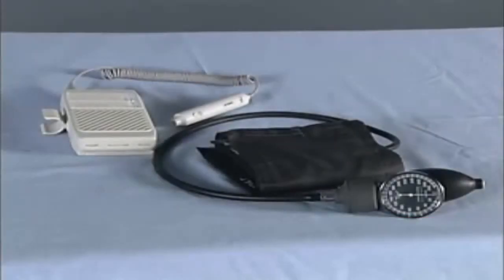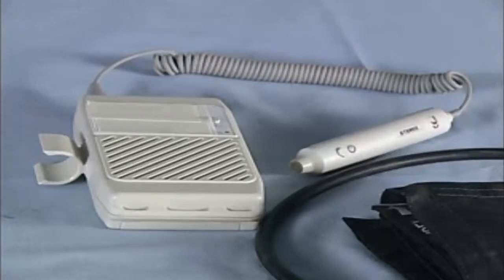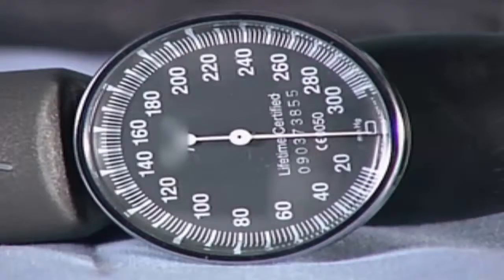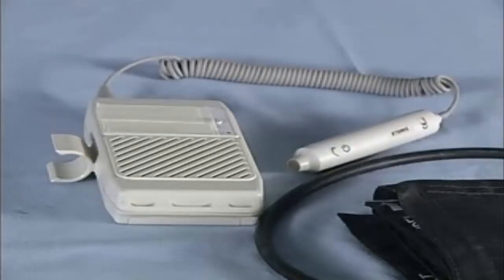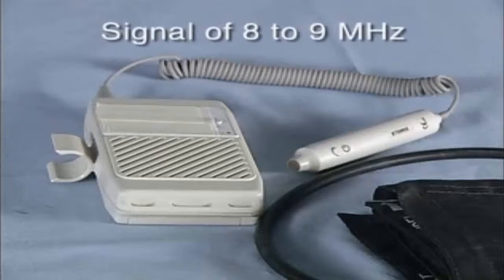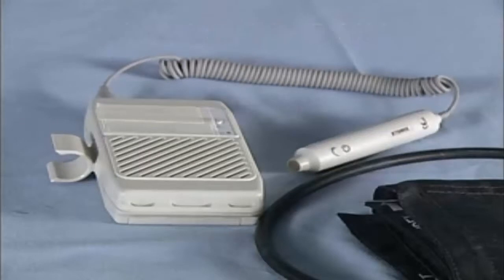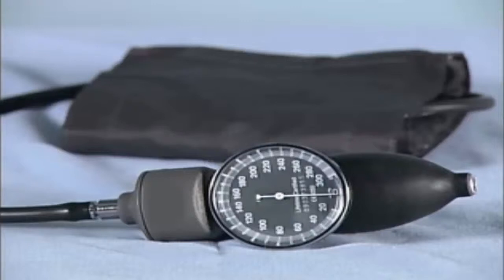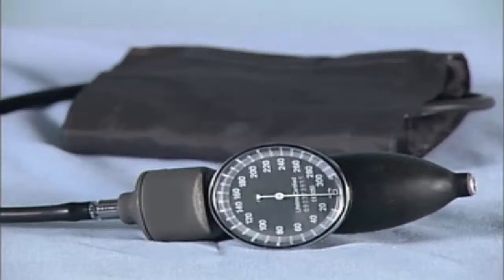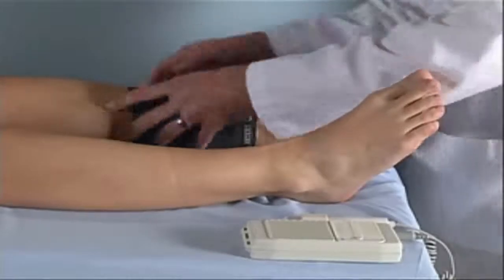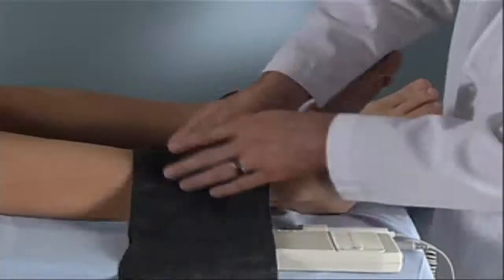In order to measure the ankle brachial index, you will need the following equipment: a continuous wave Doppler device, ultrasonic gel, and a sphygmomanometer with a blood pressure cuff. The Doppler ultrasound probe should produce a signal of 8 to 9 MHz in order to examine peripheral blood vessels. Handheld Doppler devices are generally adequate to measure the ankle brachial index. The diameter of the inner bladder of the blood pressure cuff should be 40% of the limb circumference. The examination should be performed with the patient supine and in a warm and comfortable environment.